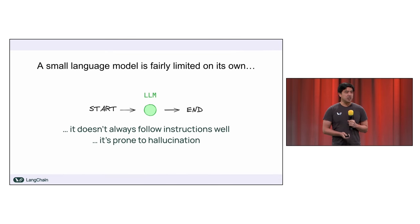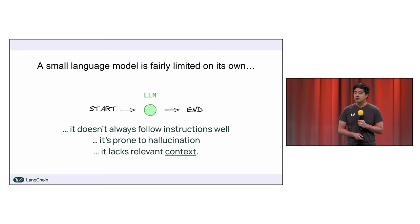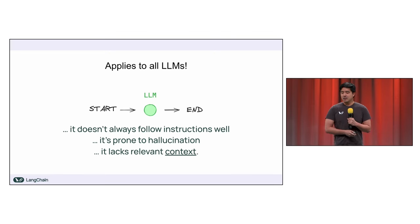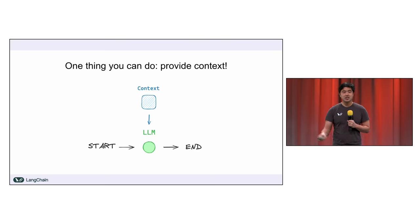These are two big examples of limitations that boil down to a similar problem: the model lacks relevant context as to what you're trying to do. This applies to all LLMs — even the biggest and best models can hallucinate at given points. A good strategy to combat this is simple: provide the context.